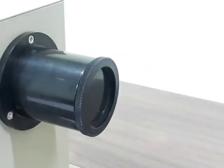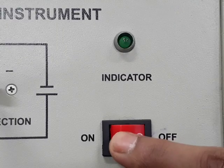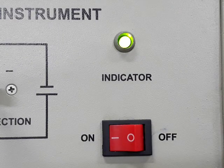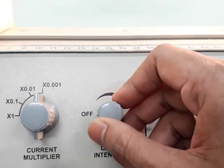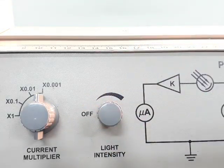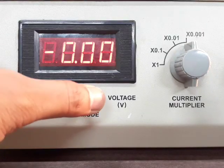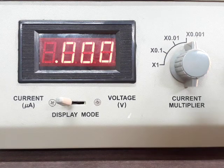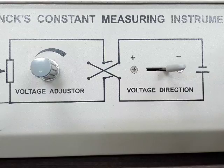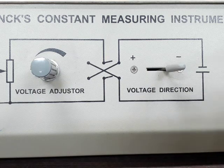Now we are starting the experiment. The plastic cap is at its place. The power switch is on. The light intensity knob is at its most. For current detection, this toggle switch is towards the current direction and the multiplier is at 0.001. The voltage direction toggle switch is in the negative direction.